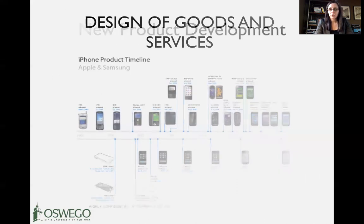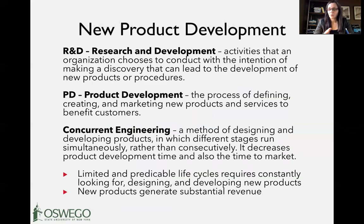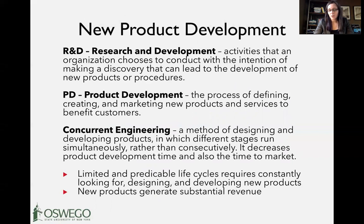Today we'll talk about design of goods and services. To start, a few key terms: R&D — research and development — is the fuzzy front end. It's the innovation space where you're coming up with new products or services. It's very experimental, with a lot of ideas discussed. Historically, once R&D came upon one or two promising designs, they would pass it to product development, who handled design for manufacturing and moving the product into production.